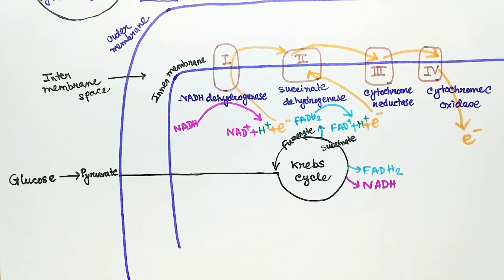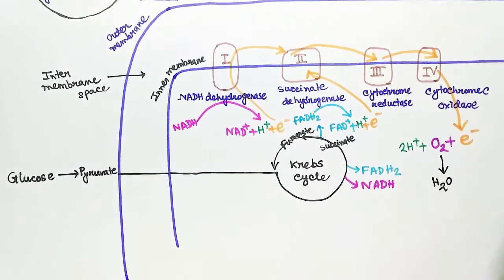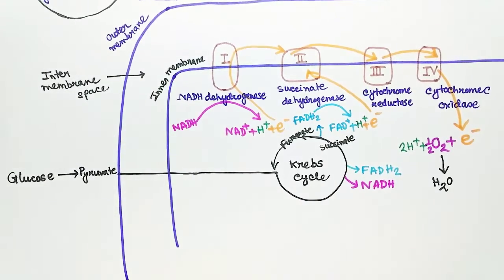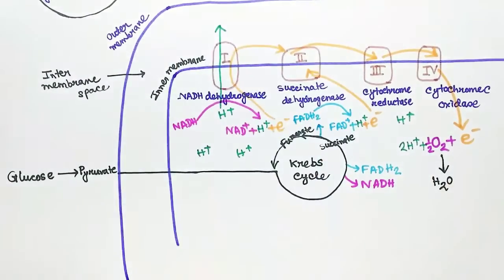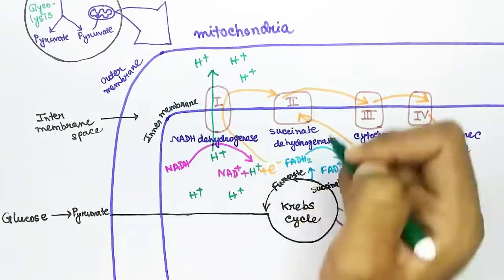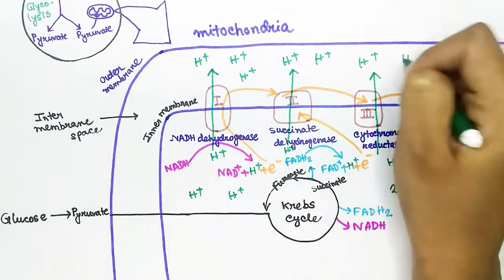After passing through Complex 4, the electrons will contribute to the production of water molecules by binding with oxygen and H+ molecules. This is why the electron transport chain is dependent on oxygen. The purpose of passing electrons through the complexes is to push H+ ions from the matrix of mitochondria to the inter-membrane space.